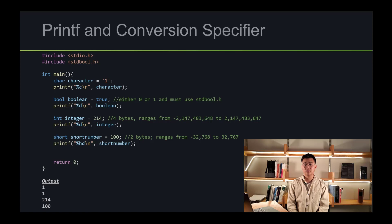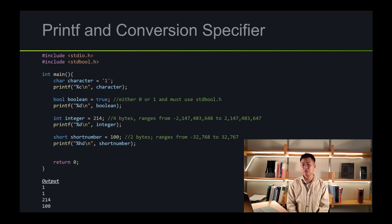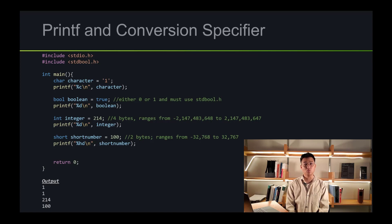Next is boolean. In order to use boolean, we have to include a library called stdbool.h, which I've already included at the top of the code. We can set the boolean equal to true, false, one, or zero. In order to print out a boolean, we're just going to print out the number using %d. If we look at the output, it printed out 1, because true is equal to 1 in binary.